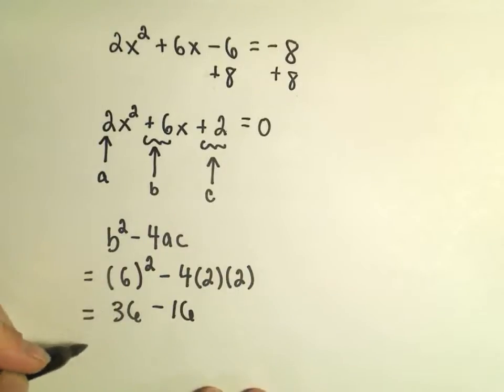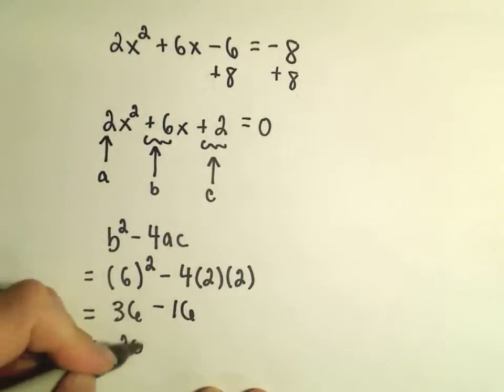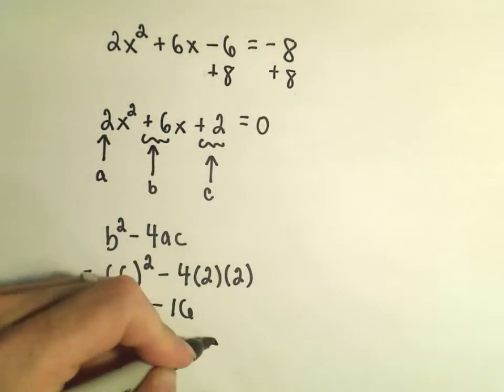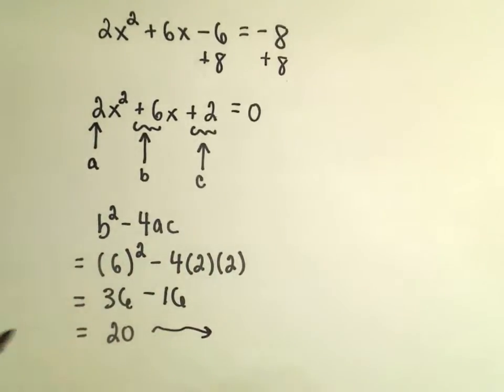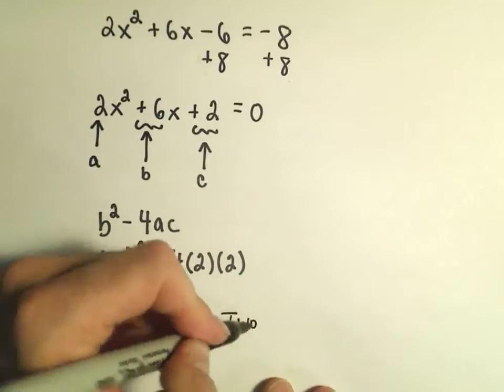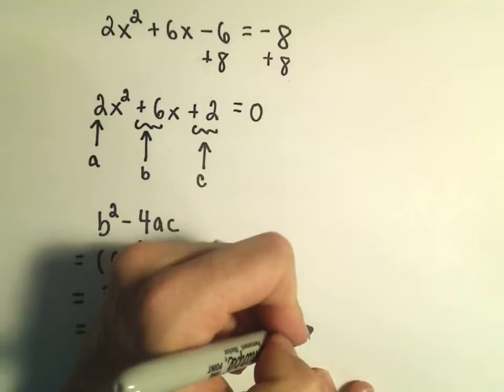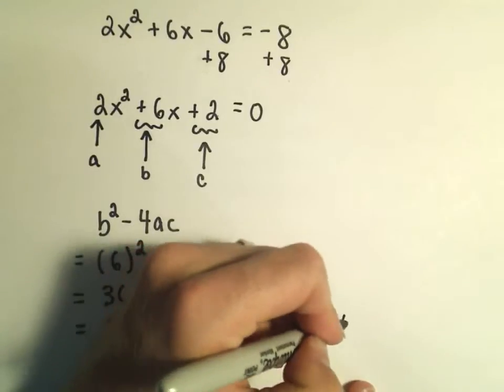So, we're going to have 36 minus 16, which will give us a positive 20. So, since the discriminant is a positive number, what that tells us in this case is that we have 2 real solutions. I should say 2 real, we can even clarify, distinct solutions.